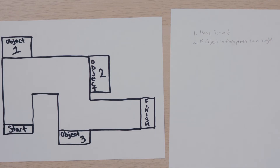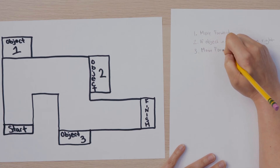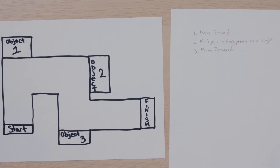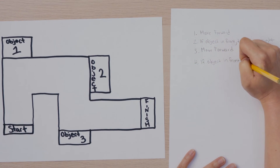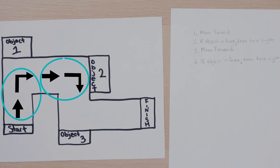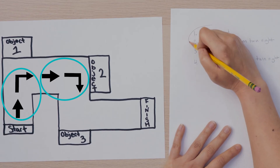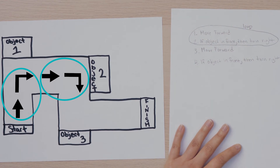After the bot avoids the wall by turning right, the bot will move forward again. Write 'Move Forward' to remember this will be the third step in the sequence. The bot is going to come to another wall, so there is another conditional — write 'if object in front, then turn right.' Do you see a loop or a set of steps that repeats? The bot is going to move forward and if it senses an object, it will turn right two times. Circle the first two steps and write 'loop.' You can also cross off the other two steps since they will be completed by the loop.